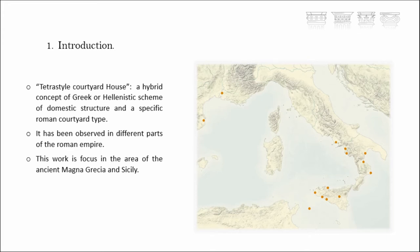This Domus is a hybrid concept combining Greek and Hellenistic schemes of the house with a particular Roman courtyard type, and has been observed in different parts of the Roman Empire. However, Tetrastir is focused on the area of ancient Magna Grecia and Sicily in the last centuries of the Republican period, when Greek colonies in this area became Roman cities or came under Roman influence.